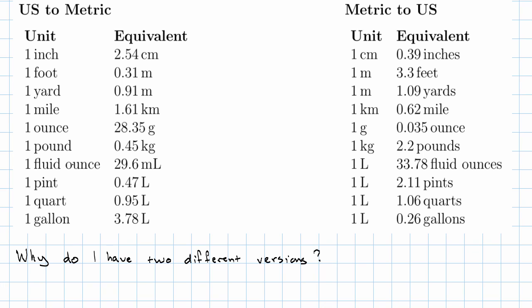It turns out that the reason that I need two different versions of my conversion factors is that these are all rounded, except for this one. One inch is exactly 2.54 centimeters. That's actually how the inch is defined nowadays. But other than that, these are all rounded values. These are all approximations. Why does that matter?